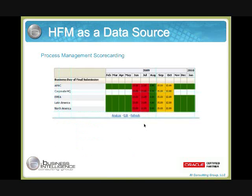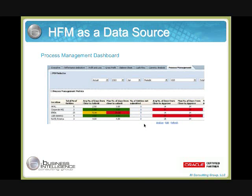Here's an example of process management scorecarding — we can take a look at location and see what's going on. You can set up a point of view, giving filter capabilities on dashboards. This is a quick look at HFM data as presented to the end user, showing process management metrics such as a breakout of how many entities are at a particular location and the average number of days from close to actually submitting.